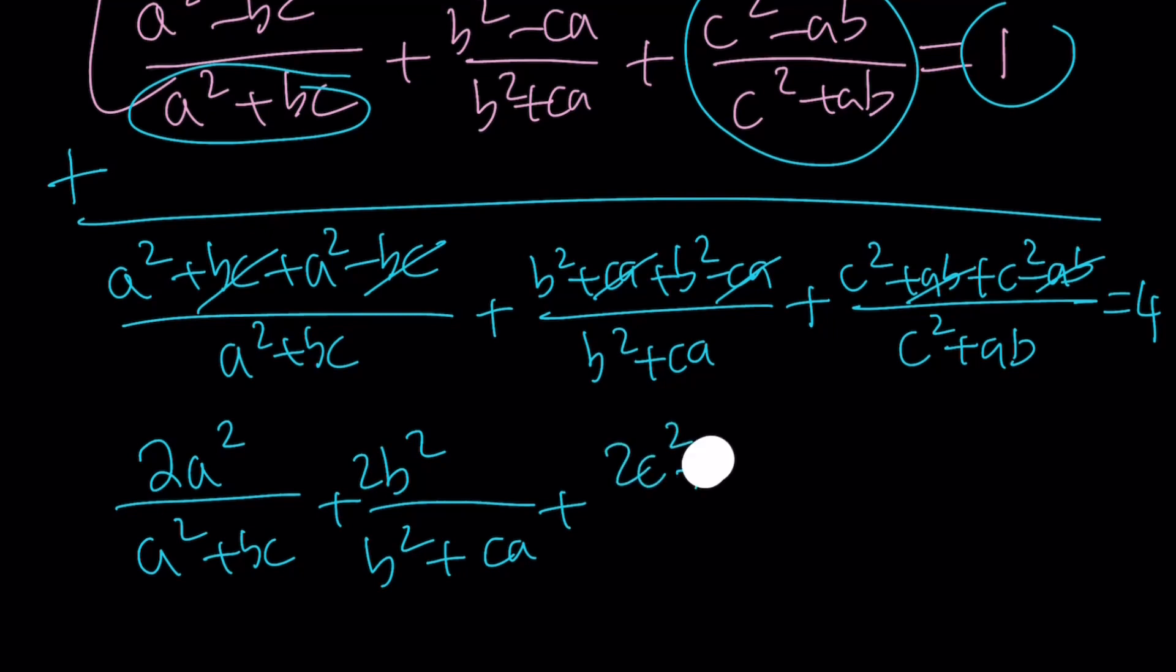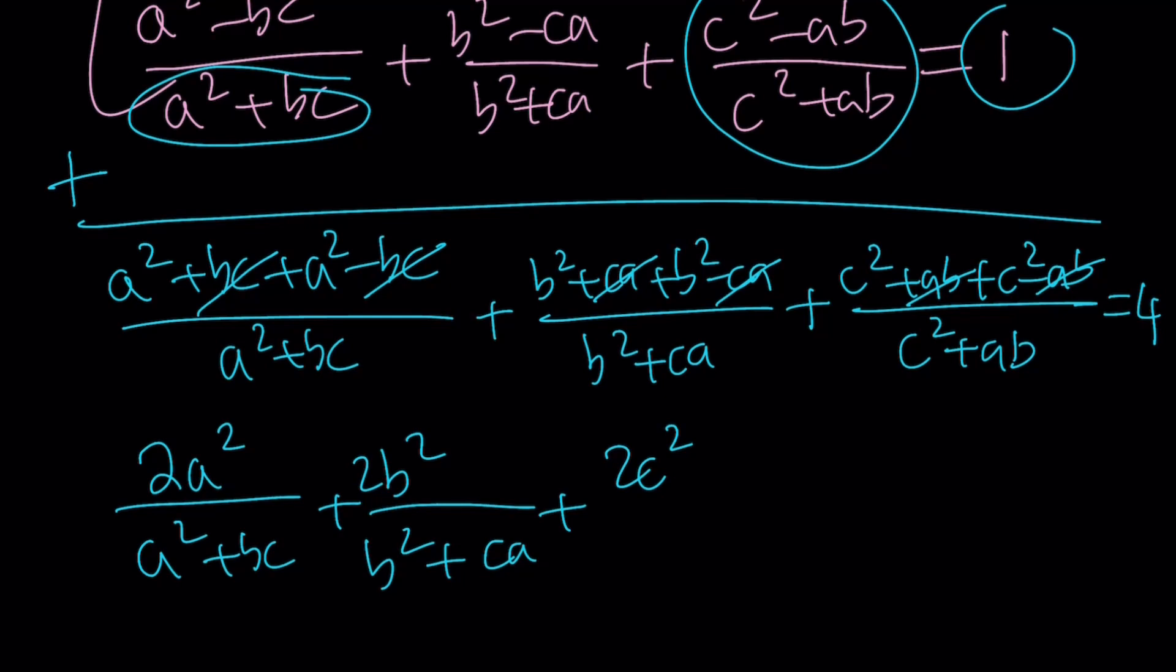Awesome. But how is this helpful? Well, remember I said these are kind of like conjugates. bc and negative bc, ca and negative ca, ab and negative ab, they all cancel out. Leaving us with something super duper nice. 2a squared divided by a squared plus bc, plus 2b squared divided by b squared plus ca, plus 2c squared divided by c squared plus ab. And we know that it's equal to 4 from here.